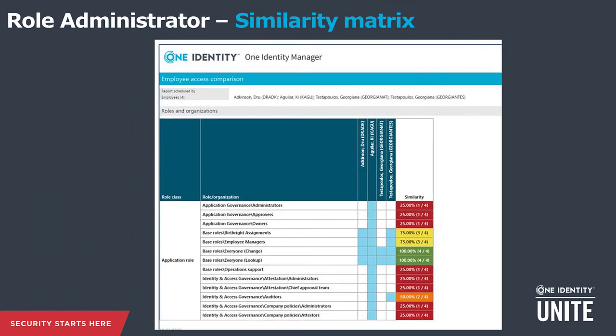Here's a preview of a similarity matrix report, which will be standard in Identity Manager 8.2. It's a role-mining-style tool — useful for a help desk persona too. If Rob calls with no access to a system that his colleague has, you can run a similarity matrix to see exactly where the differences are and align them. It's a really nice report that's just below the surface and will be shipping as standard in the not too distant future.